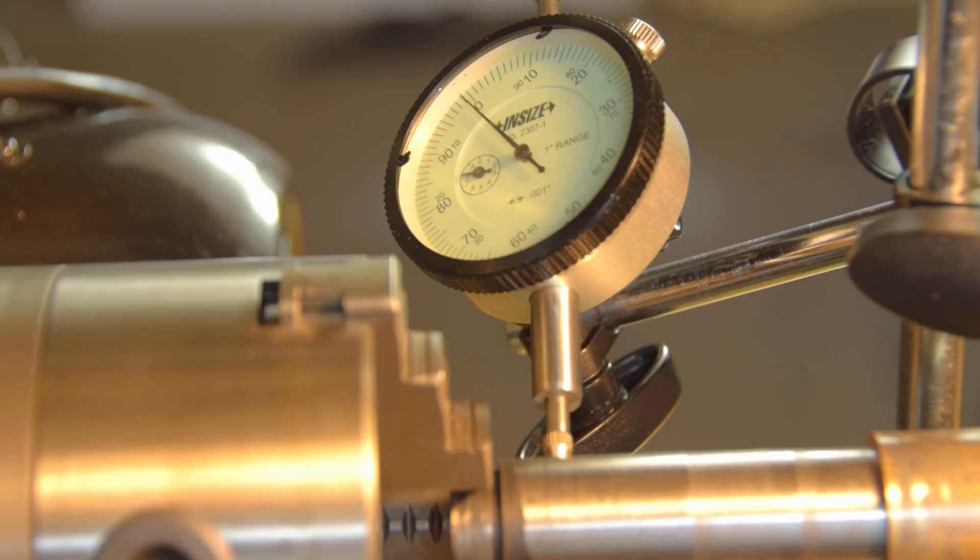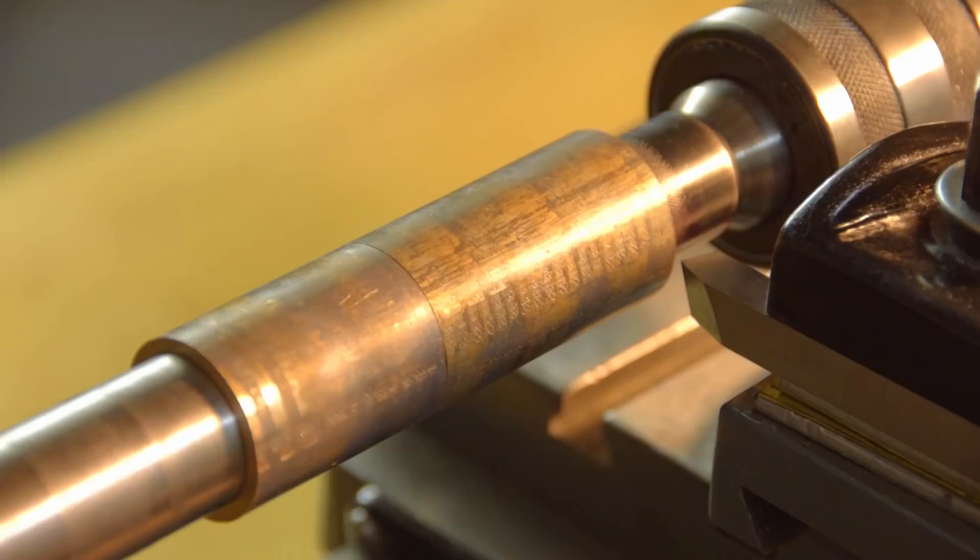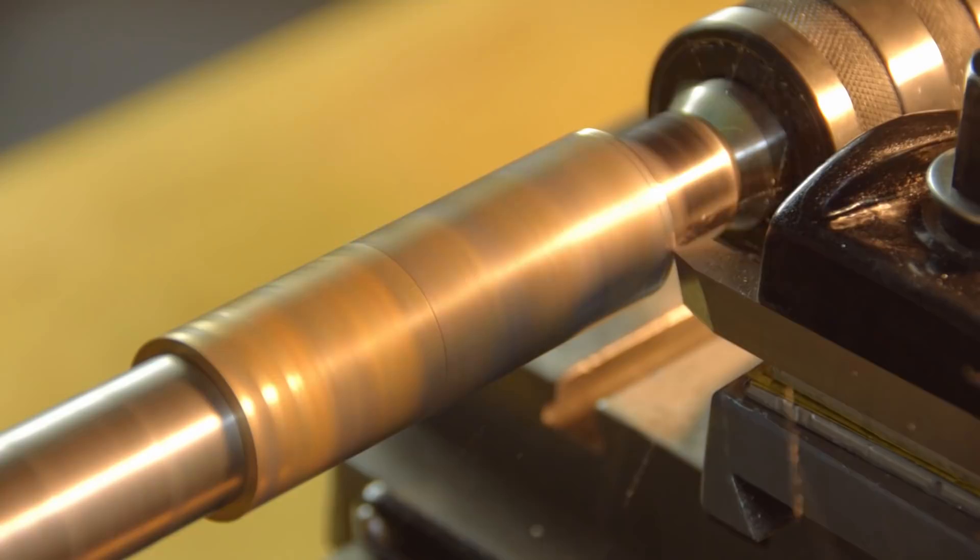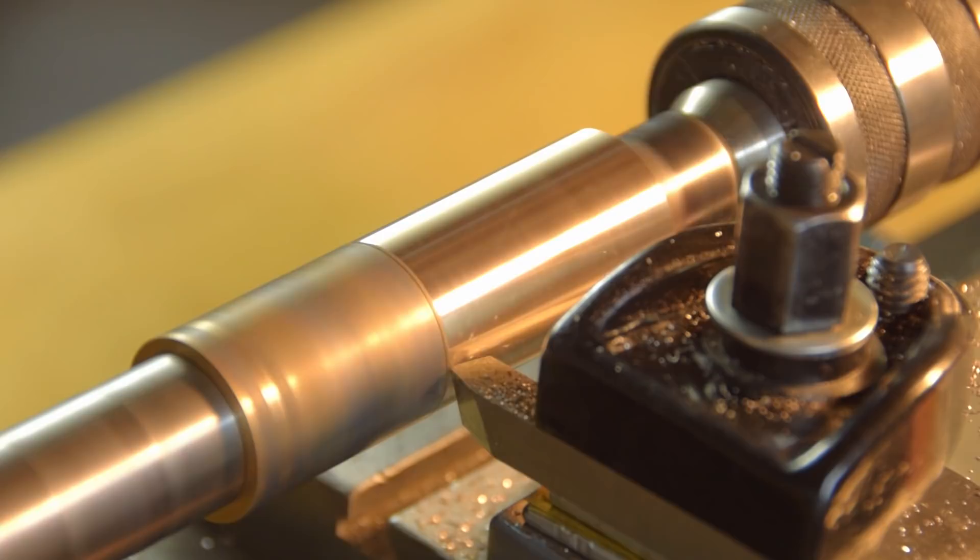I had to go through the whole setup again, but I did mark where the sleeve was relative to the chuck jaws, and it's also easier to indicate now that I have a turned surface to work from.